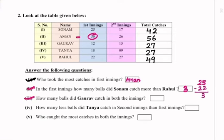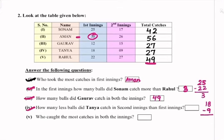How many balls did Gaurav catch in both innings? In both innings Gaurav caught 24 balls. How many less balls did Tanya catch in the second inning than the first inning? Tanya caught 18 balls in the first inning and 9 in the second inning. 18 minus 9 equals 9.